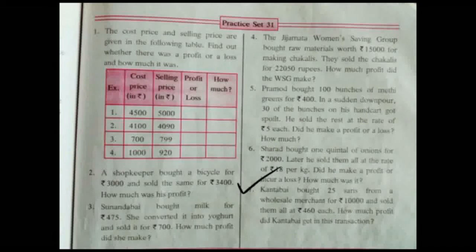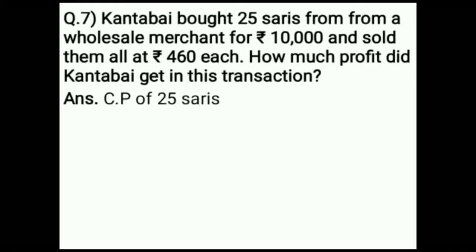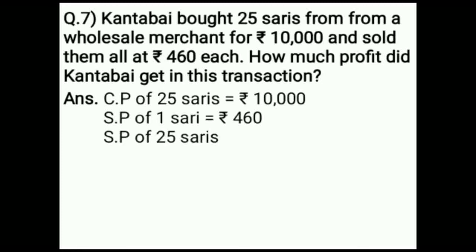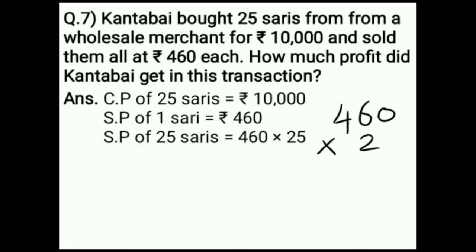Kanthabai bought 25 saris from a wholesale merchant for Rs. 10,000 and sold them all at Rs. 460 each. How much profit did Kanthabai get? Cost price of 25 saris is Rs. 10,000. Selling price of 1 sari is Rs. 460. To find selling price of 25 saris, multiply 460 into 25. 5 zeros are 0, 5 sixes are 30, 5 fours are 20 plus 3 is 23.